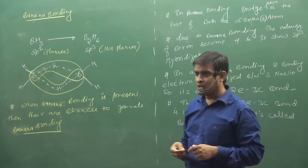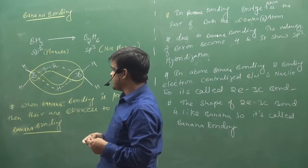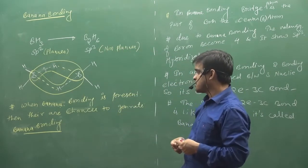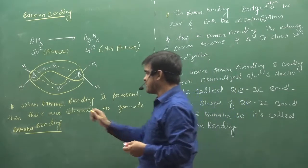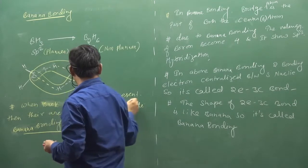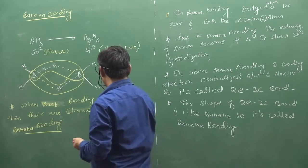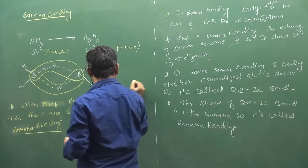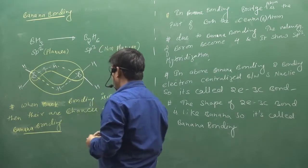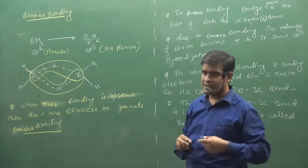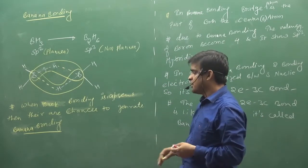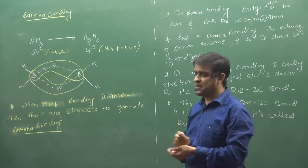So when we have banana bonding, when banana bonding is present, then there are chances to generate - when back bonding is present or absent, then there are chances to generate banana bonding. This will be our rule. So when back bonding is not happening, then you will find banana bonding.